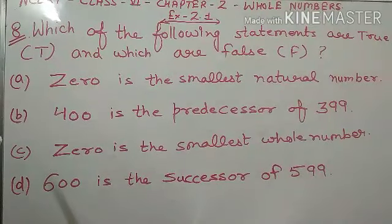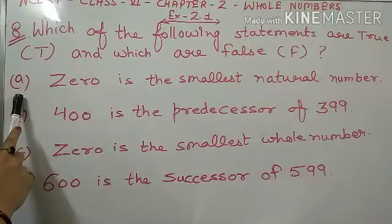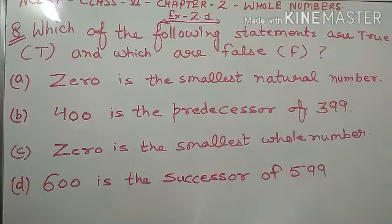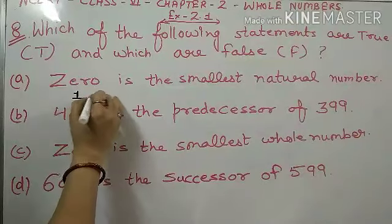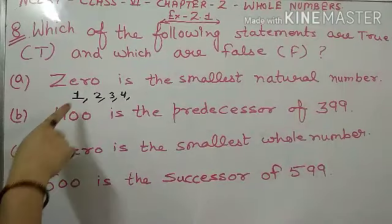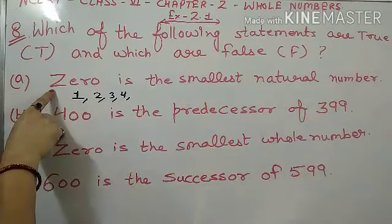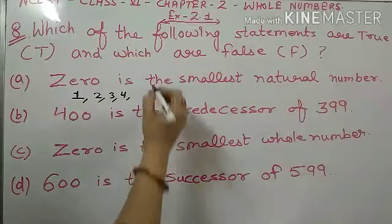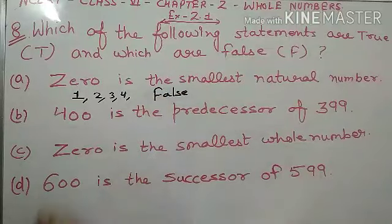Inmese konsi statements true hai bachoh aur konsi statement false hai, yeh is question mein pata na hai. So a part: '0 is the smallest natural number.' Bachoh, natural numbers start hootate hai 1 se — 1, 2, 3, 4 and many more. So smallest natural number konsa hua? 1 hua. But yahaan par 0 likha hua hai. So iska matlab hai ki yhe statement false hua. 0 smallest natural number nahi hoota. So this statement is false.